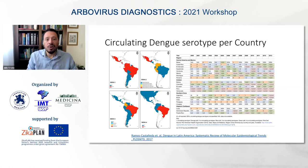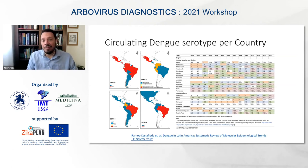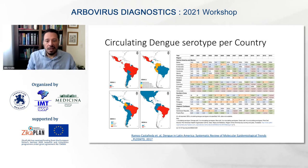Different arboviruses have circulated over time. Beginning in 2000 with a few serotypes, over time the majority of countries developed co-circulation of all four serotypes. This is very concerning and demands precaution, especially because of the increased mortality resulting from sequential infection with different serotypes.